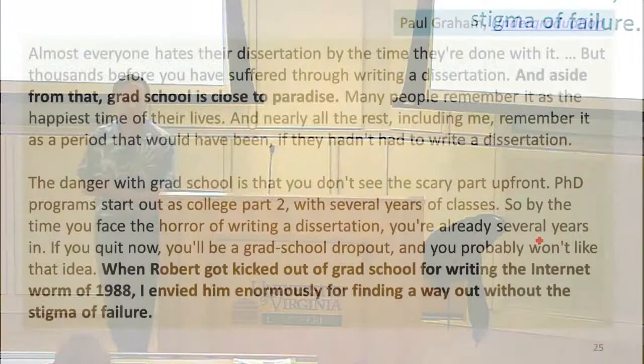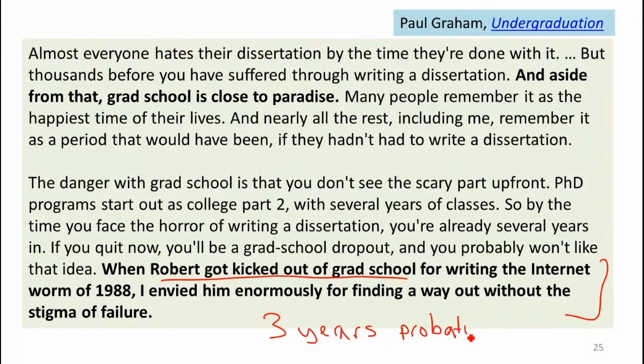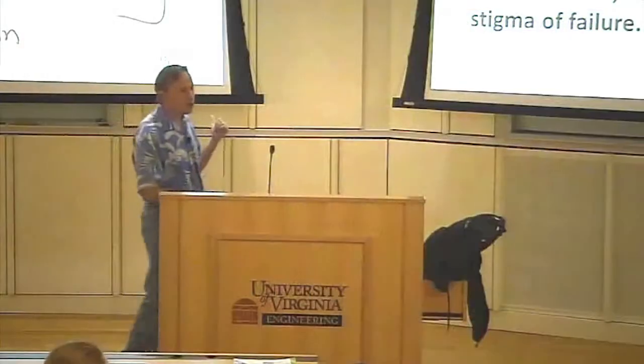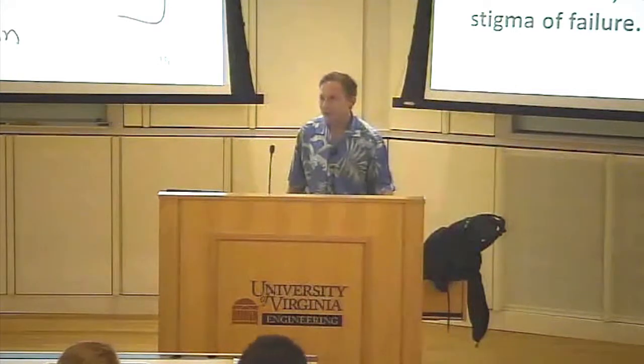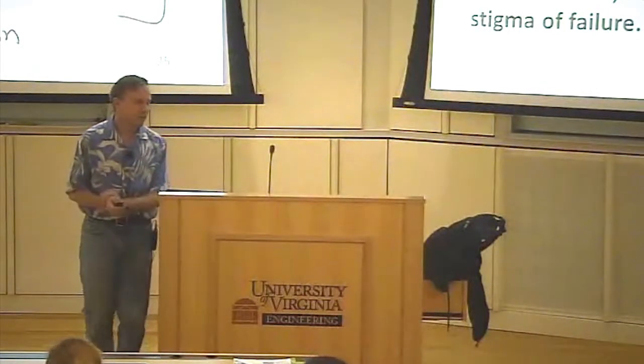There's a great essay that Paul Graham wrote about what you should do in college. I don't necessarily completely agree with everything in it, but I would strongly encourage everyone to read it. He's talking about his friend Robert, who got kicked out of grad school. This is the one that was writing the worm that ended up taking down most of the internet and envying him as finding a way to get out of grad school without the stigma of failure. I don't actually recommend that approach, and he did have about three years probation and a big fine. So it's not the easiest way to get out of writing a dissertation. Now, the penalties are much higher now, so it's probably actual lots of jail time, not just probation. But back in 1988, they didn't really have laws against computer abuse that were very enforceable. What Robert Morris is doing today is being a professor at MIT, so he's managed to turn out okay.